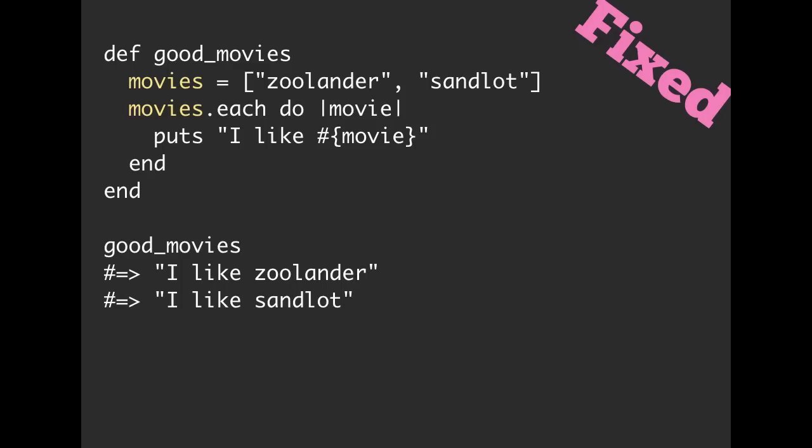Here's one way that we could fix that. We could just take that variable assignment and move it into our method. So here we have movies still equal to an array of strings, Zoolander and Sandlot. But since it's inside of our method, good movies now understands and knows what that movies variable is. So that's one way we could fix this.